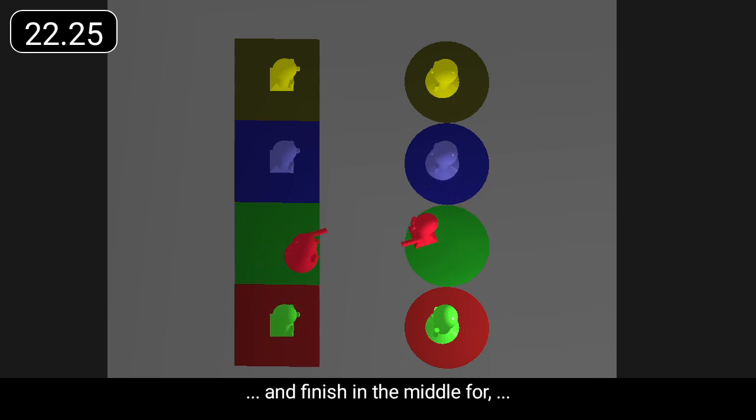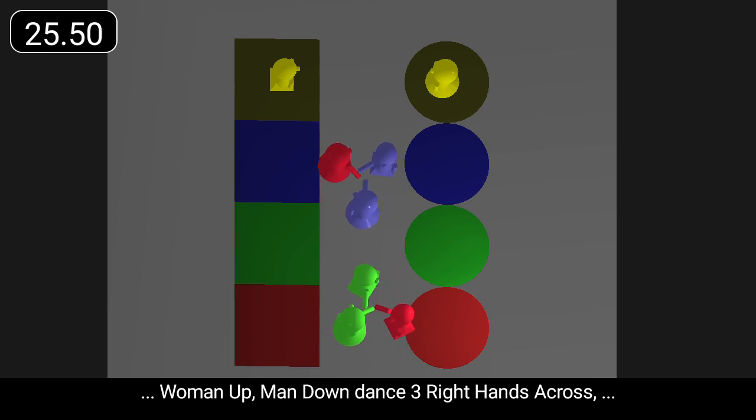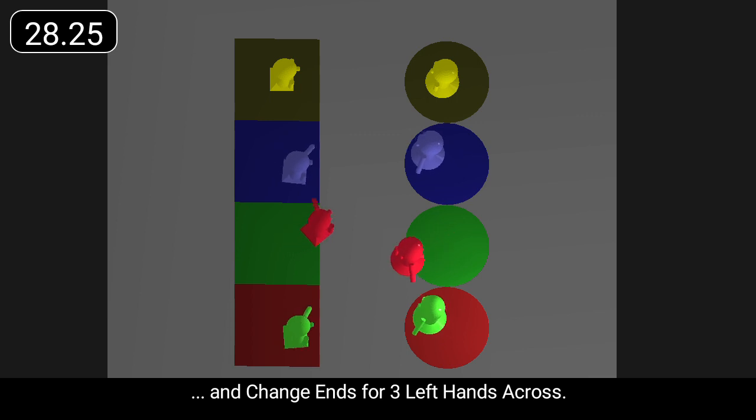And finish in the middle for woman up, man down, dance three right hands across and change ends for three left hands across.